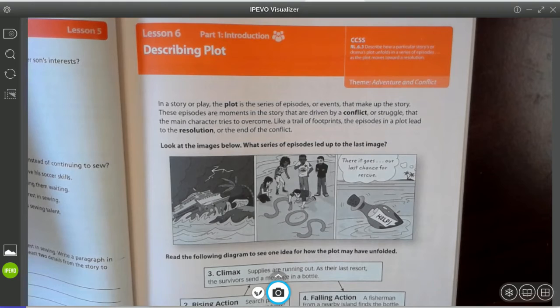So in a story, the plot is the series of episodes or events that make up the story. These episodes are moments in the story that are driven by the conflict or struggle that the main character tries to overcome. Like a trail of footprints, the episodes in a plot lead to the resolution or to the end of the conflict.